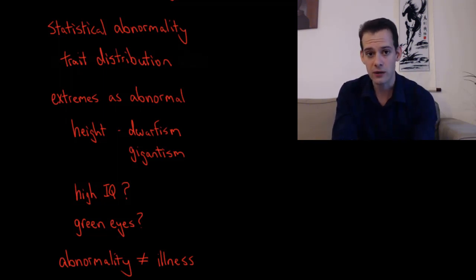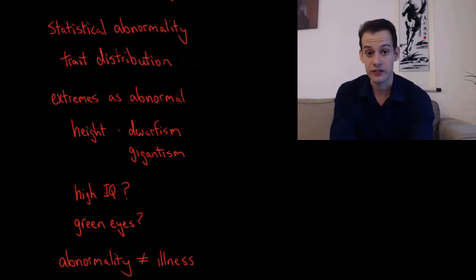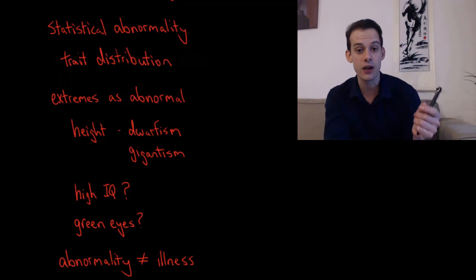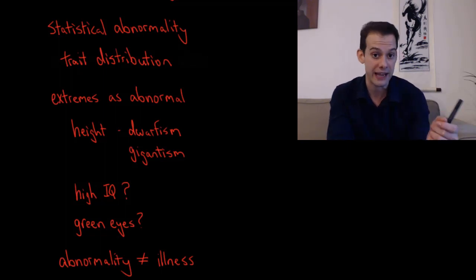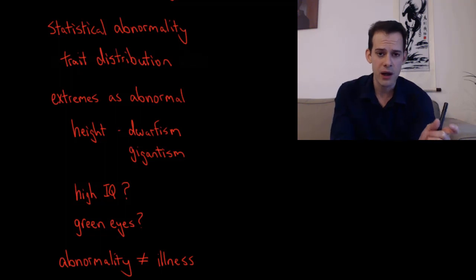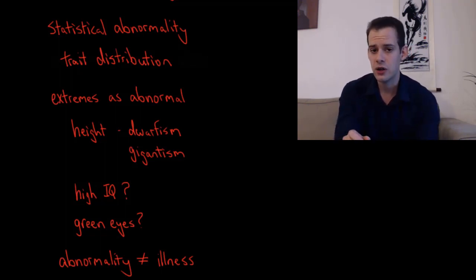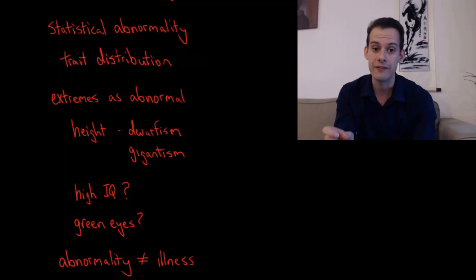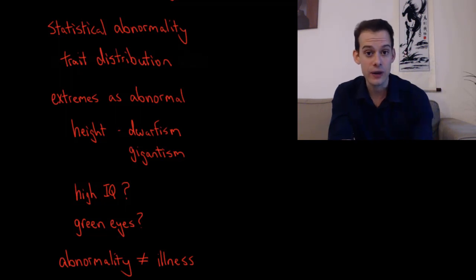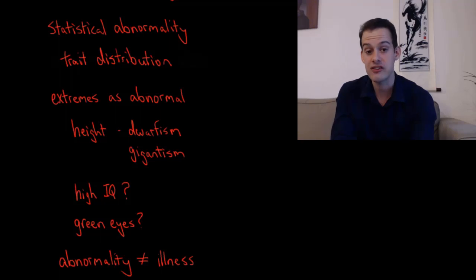The problem is this doesn't work quite as well for psychological traits, because sometimes things are statistically abnormal but don't represent an illness or disorder. For instance, if we look at intelligence and the distribution of IQ scores, we again have roughly a normal curve. At the low end, very low IQ might represent a problem — there are illnesses or syndromes associated with that. But at the other end, very high IQ, we don't think the same way. We don't say that if your IQ score is over 145, which is statistically abnormal, you therefore have a disorder and we need to bring your IQ score down. Even though high IQ is statistically abnormal, it doesn't necessarily indicate a psychological disorder.